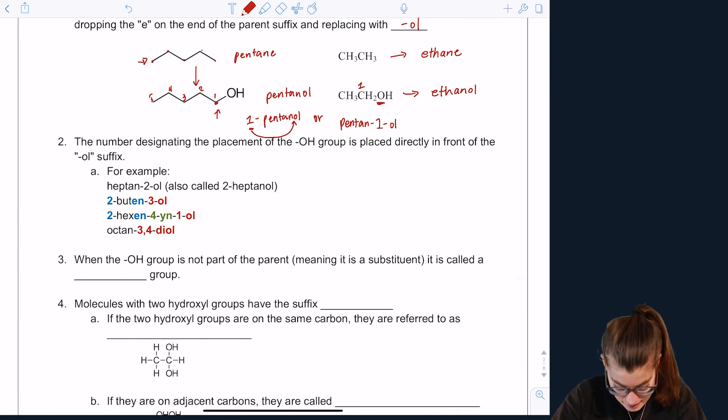The number designating the placement of the OH group is placed directly in front of the ol suffix. And like I said, that's how I prefer to do it. But sometimes people will write it the first way I wrote it. So for example, heptan-2-ol. I know that the alcohol group is on carbon number two. And so sometimes we put the two in front. Personal preference.